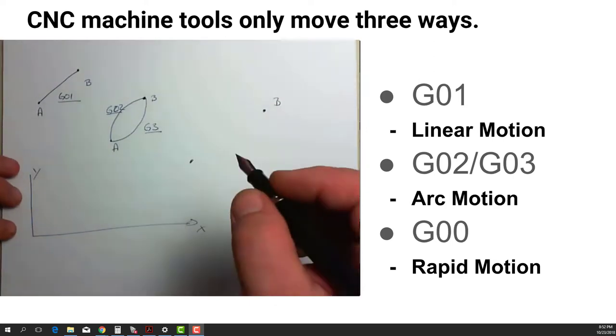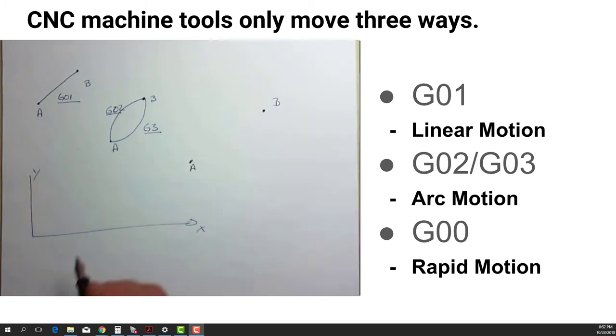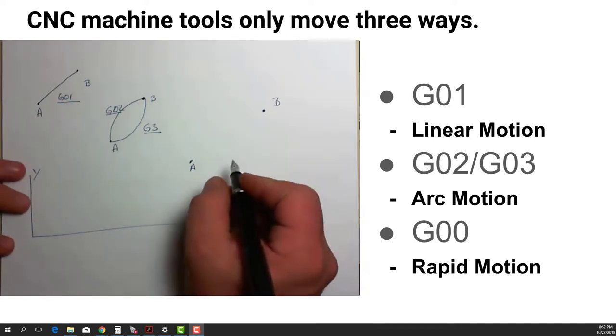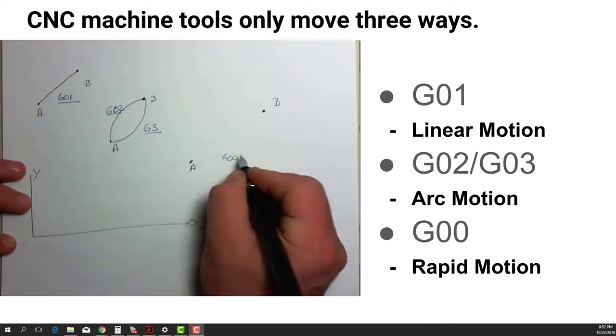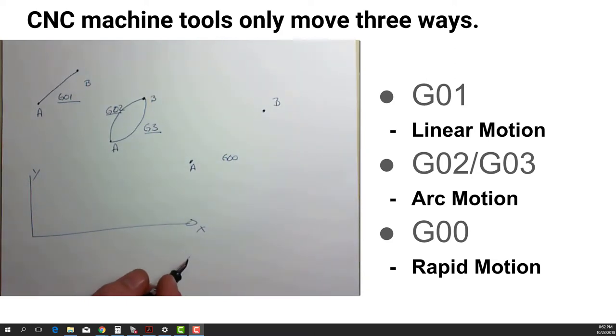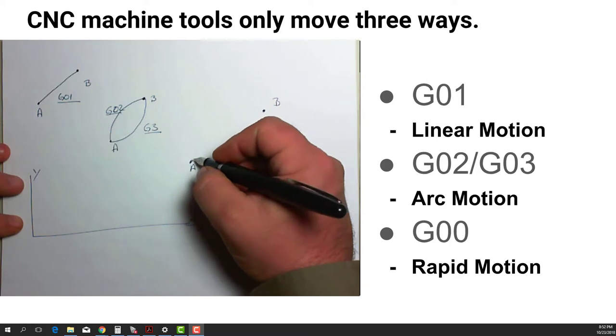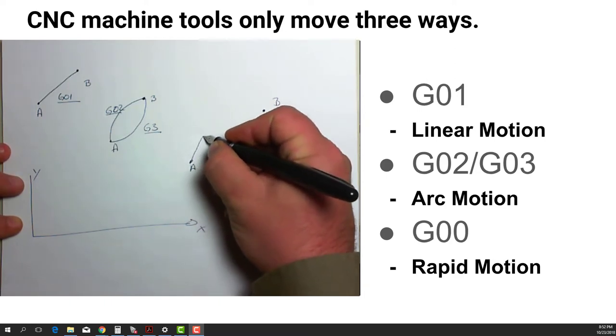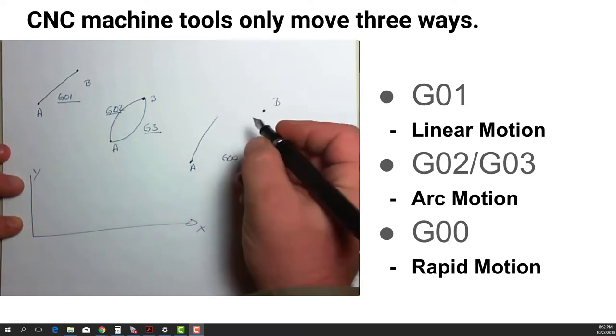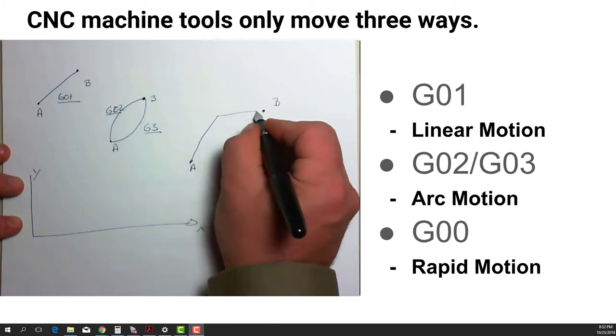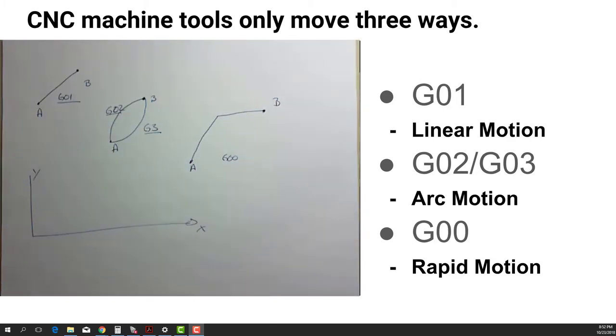If we want to move from point A to point B as fast as the machine can get from one place to another, we use a G00 command. That G00 does not necessarily move in a straight line. In fact, the typical machine tool controller will have it move at 45 degrees until it finds one of those positions and then move in a straight line the rest of the way. We call that a dog leg rapid move.